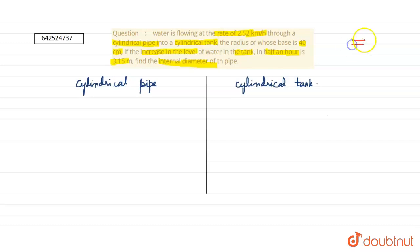We have a cylindrical pipe, and from this pipe the water is flowing into a cylindrical tank. We have to find the internal diameter of the pipe.